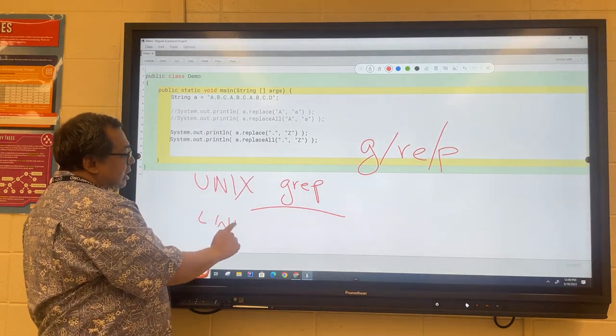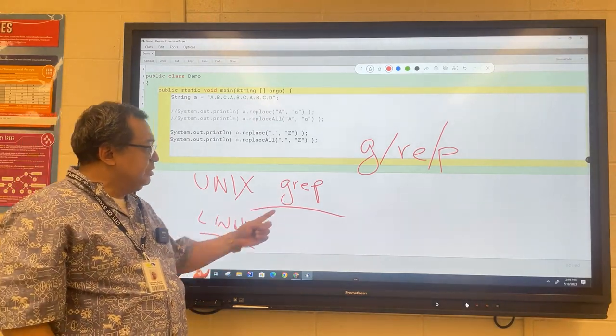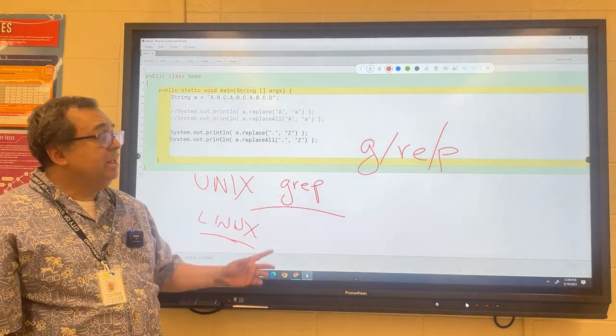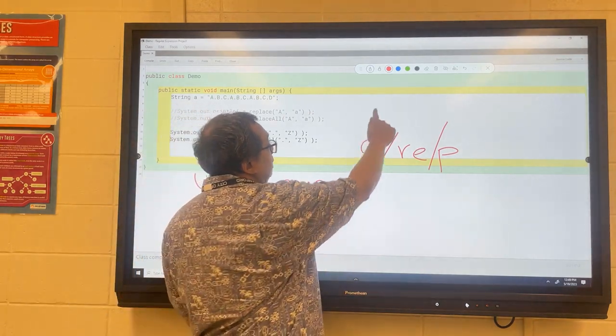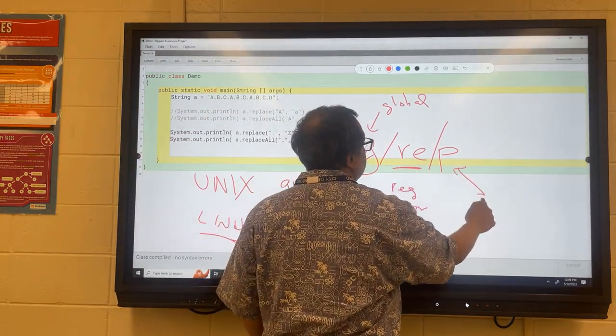Grep stands for global, this stands for regular expression, and this stands for print. Basically, we want to look at a bunch of data and identify pieces of the strings that match certain criteria.